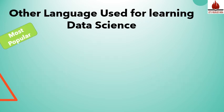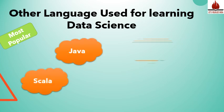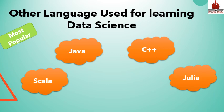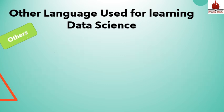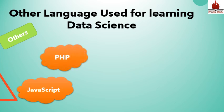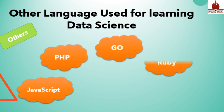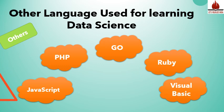There are other languages also used in data science: Java, C++, and Julia — Julia is also nowadays popular amongst data scientists. Additionally, JavaScript, PHP, Go, Ruby, and Visual Basic are some languages used for different tasks. Different tasks require different languages.